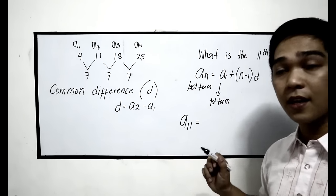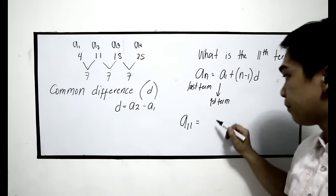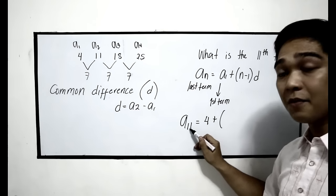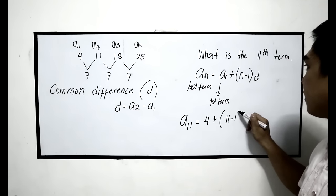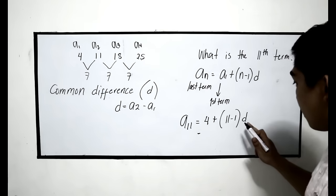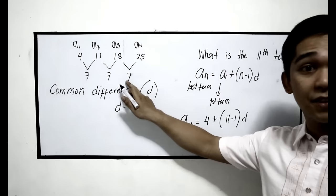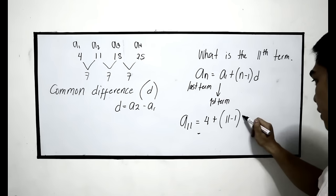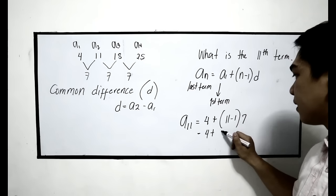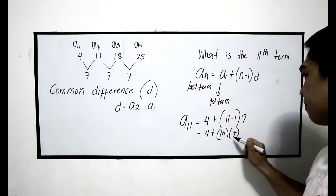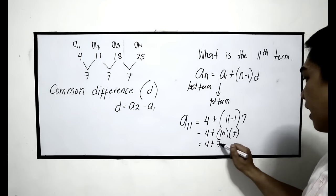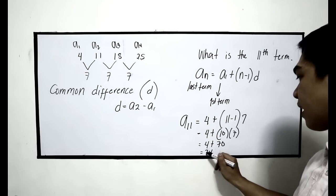Substitute the formula. A1, our a1 is 4, plus n, the n term is 11, minus 1 times d. D is 7. So we substitute: 4 plus 11 minus 1, that is 10 times 7. 4 plus 10 times 7 is 70, and the result is 74.